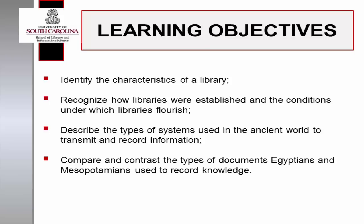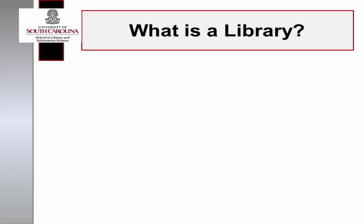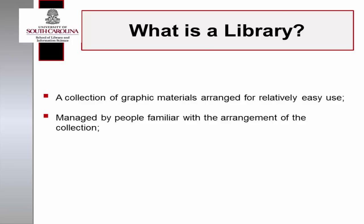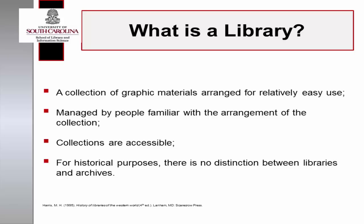Our exploration of the history of libraries begins by defining what a library is, the purpose libraries serve, and the conditions in which libraries flourish. In the seminal text, History of Libraries of the Western World, Michael Harris notes that it is important to understand what a library is before explaining the history of libraries, stating that a library is a collection of graphic materials arranged for relatively easy use, cared for by an individual or individuals familiar with the arrangement, and accessible to at least a limited number of persons. Harris also points out that the distinctions made between libraries and archives are relatively modern, and for historical purposes, these entities can be considered together.